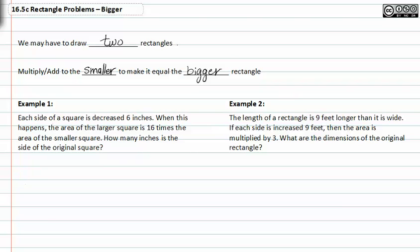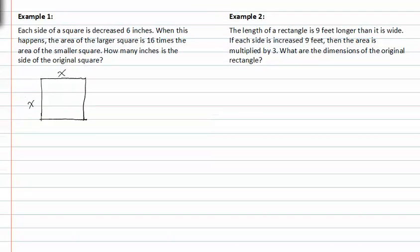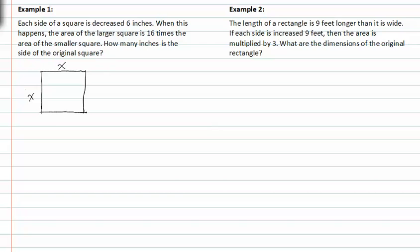In example one, each side of a square is decreased six inches, so we have a square and we'll call the sides x. Since it's a square, the sides are equal. We need to recognize that they're decreasing both sides of the square by six, so this new little square in here has sides defined by x minus six and x minus six.